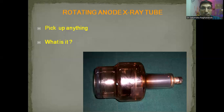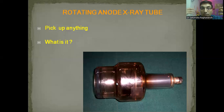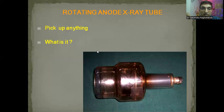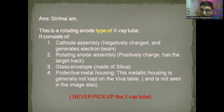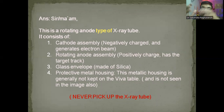Many students just say 'sir, this is an x-ray tube' — that is a very absurd and substandard way of answering. You have to be more technical and scientific. What you should say: 'Sir, this is a rotating anode type of x-ray tube. It has various components. The cathode assembly is negatively charged and generates the electron beam. The long stem is the rotating anode, which is positively charged and has a target track. The glass envelope is made of pyrex or silica, and has a window from where x-rays can come out. There is a protective metal housing made of lead.'